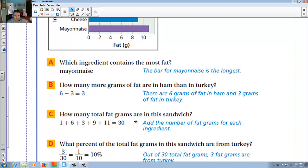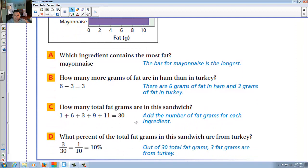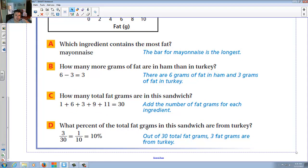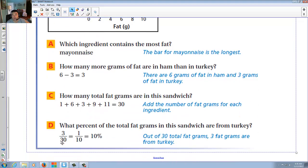How many total fat grams are there in this sandwich? So if you had all these together, you'd say one plus six plus three plus nine plus eleven. Add them all up, you'd say thirty. What's the percent of total fat grams in the sandwich that are from turkey? Well, out of thirty, turkey was three, so you'd take three over thirty, or three divided by thirty, and you'd get one-tenth.